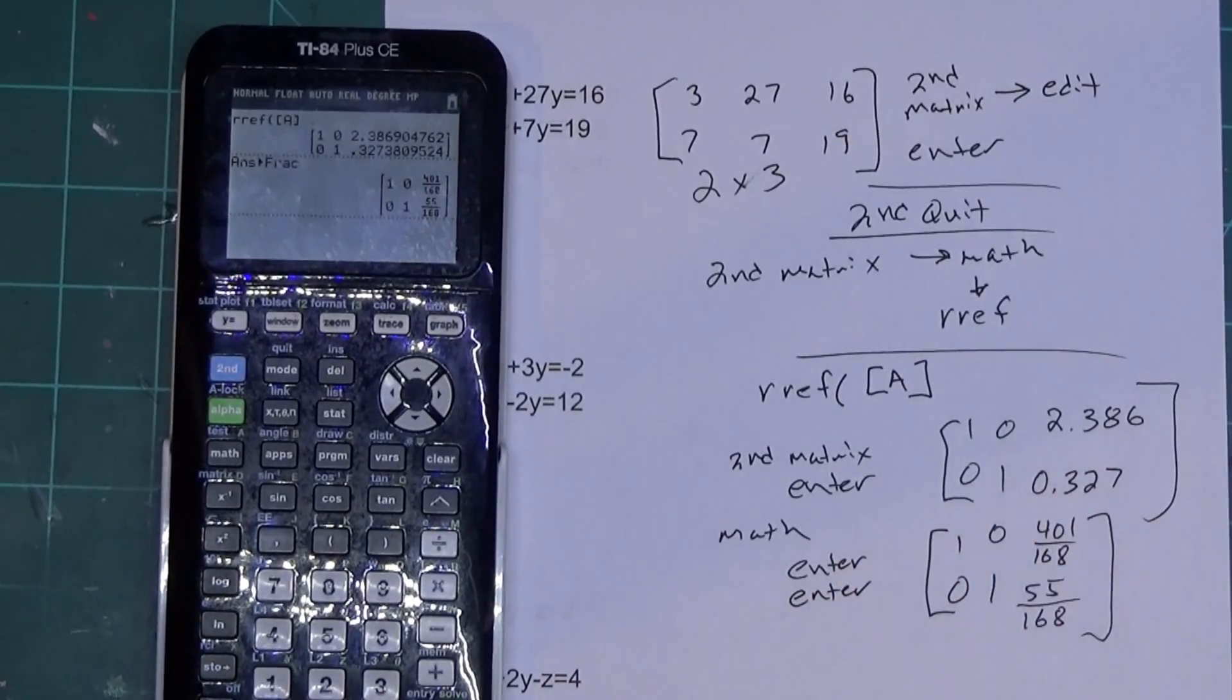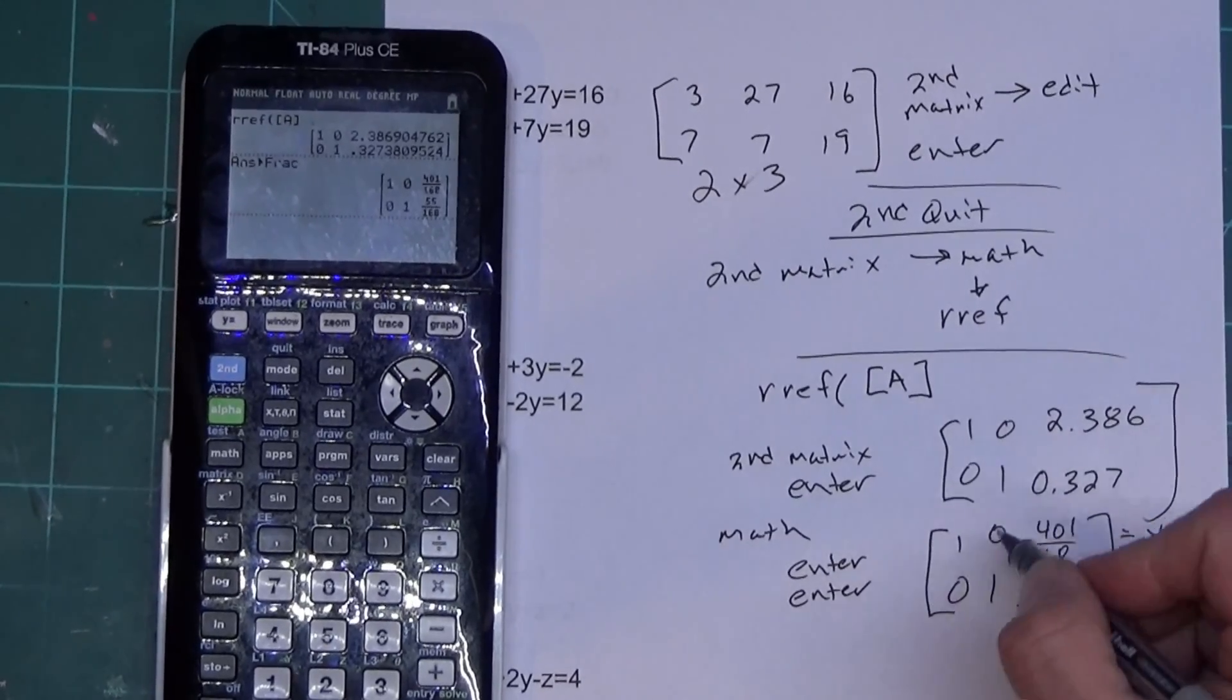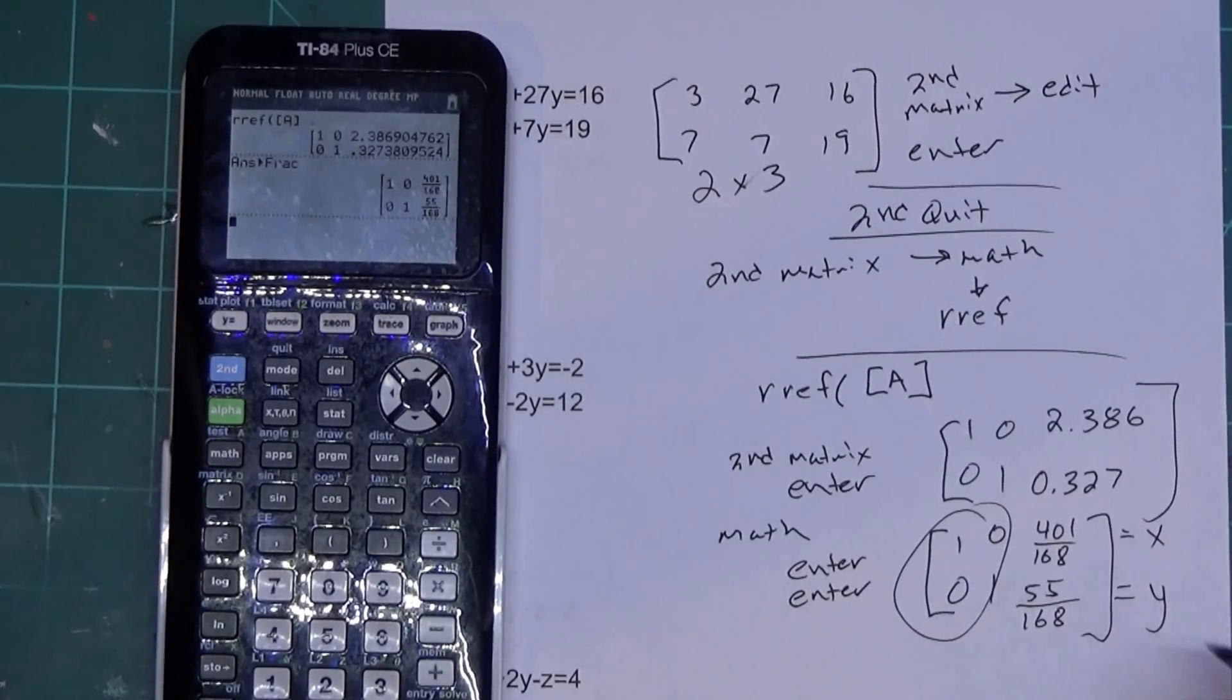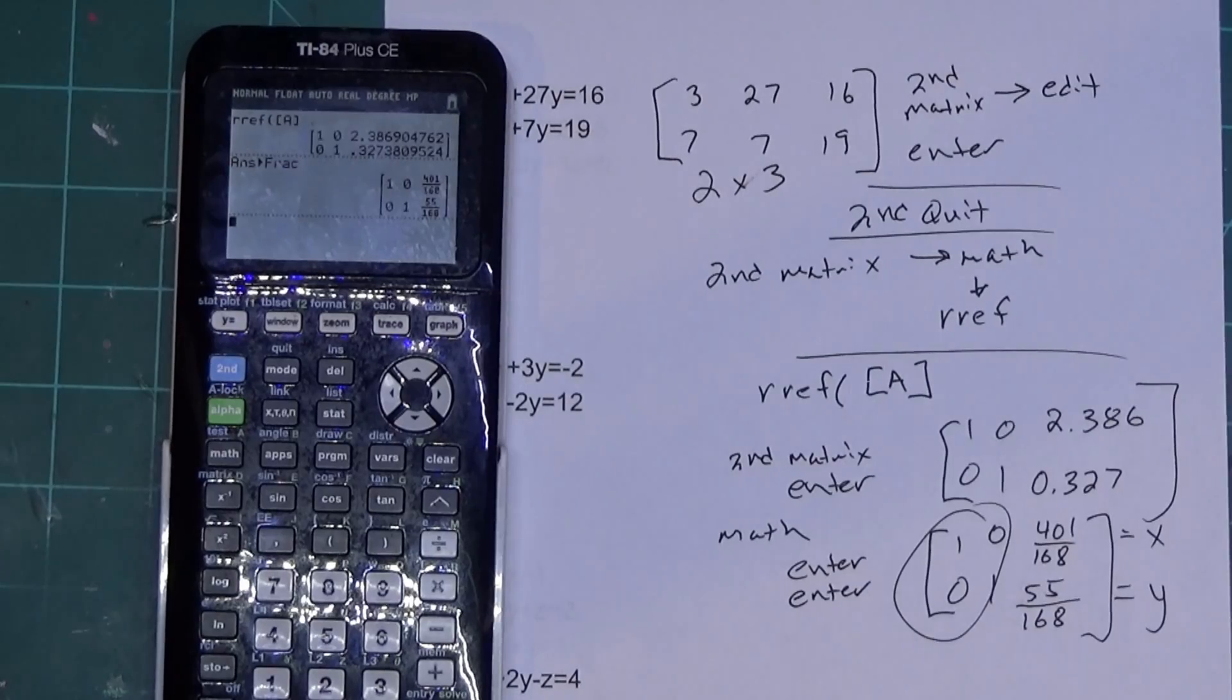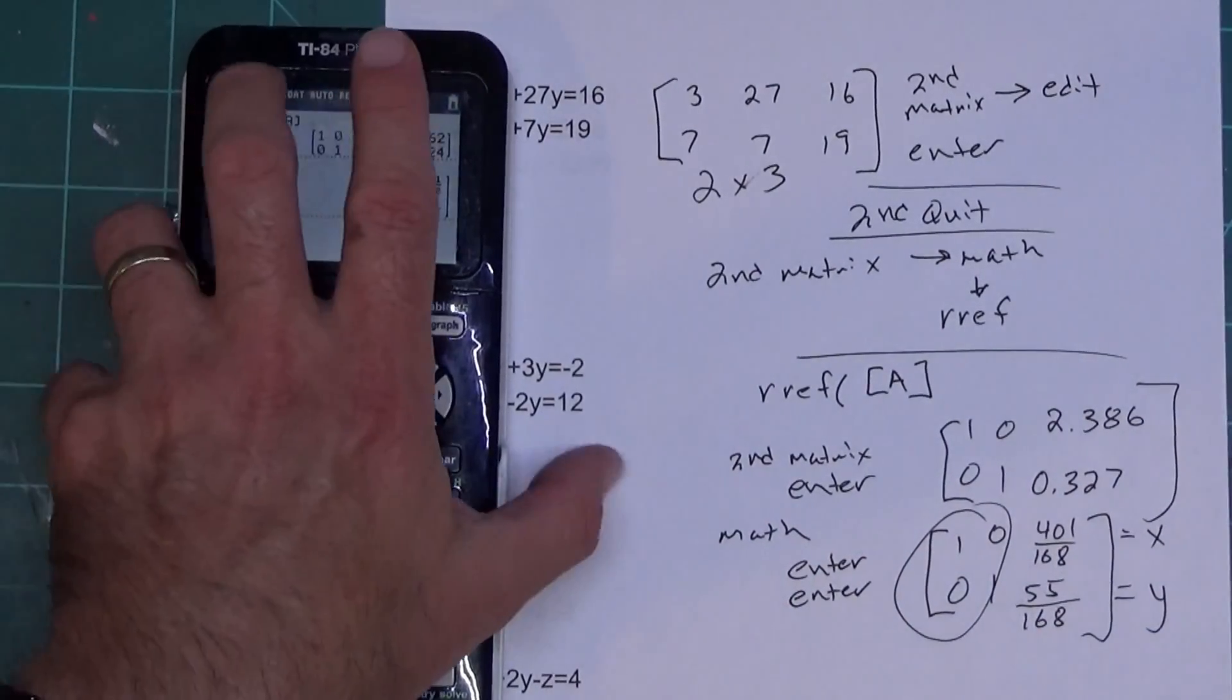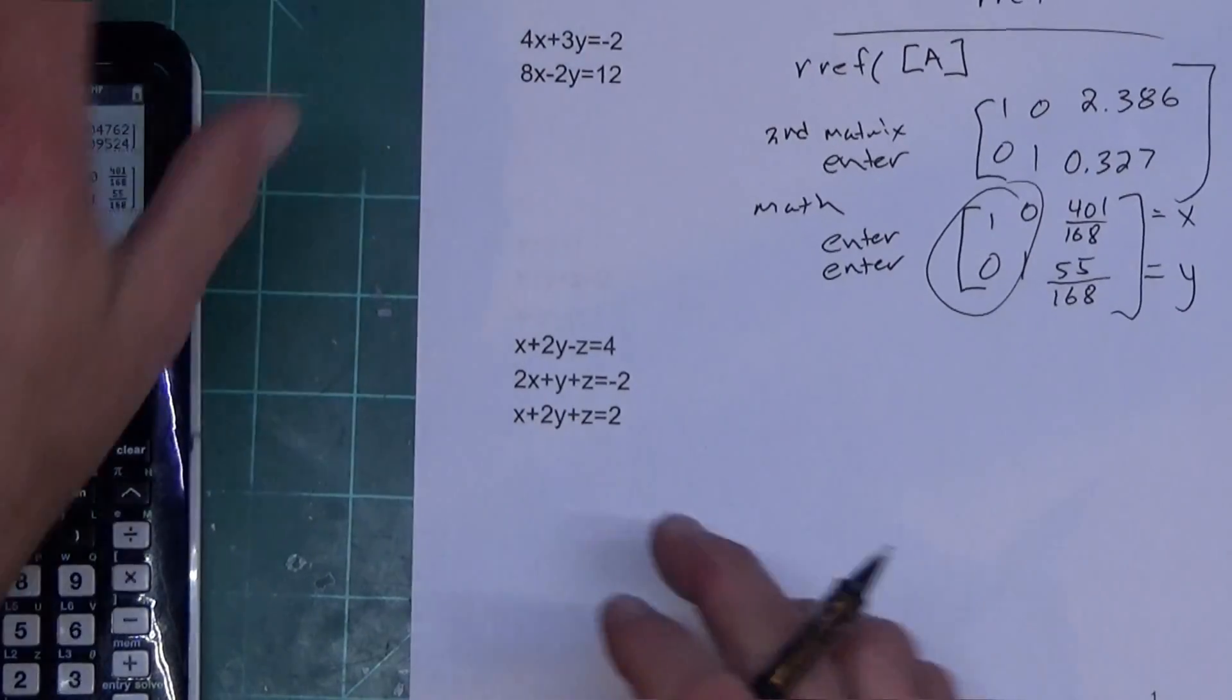And now from here this one just tells you what X is, this one just tells you what Y is, as long as that has ones on diagonal and everything else is zeros. If this gives you something else that's a little flaky and that's not what this video is about right now. The video is just about using RREF, the calculator command RREF, to solve a system of equations.